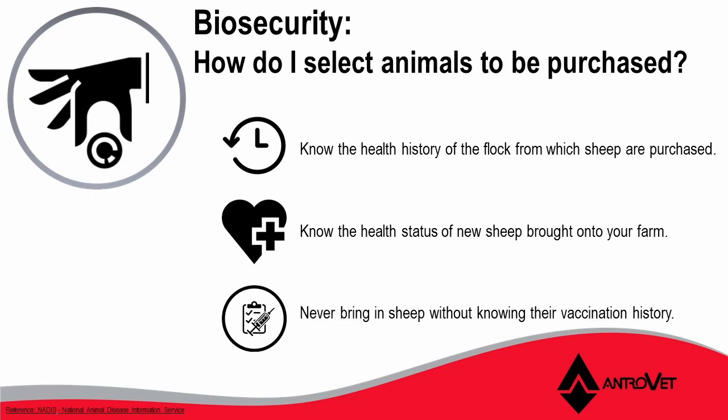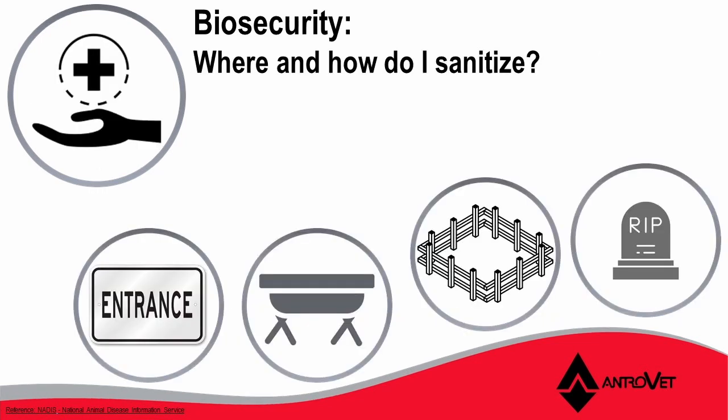Know the health history of the flock from which the sheep is purchased. Know the health status of the new sheep brought onto the farm, and never bring sheep without knowing their vaccination onto your farm. After looking at the selection, we need to look at how do we sanitize. We need to sanitize our hands, look at the entrance point of the farm, food and water troughs, pens, and mortality areas.